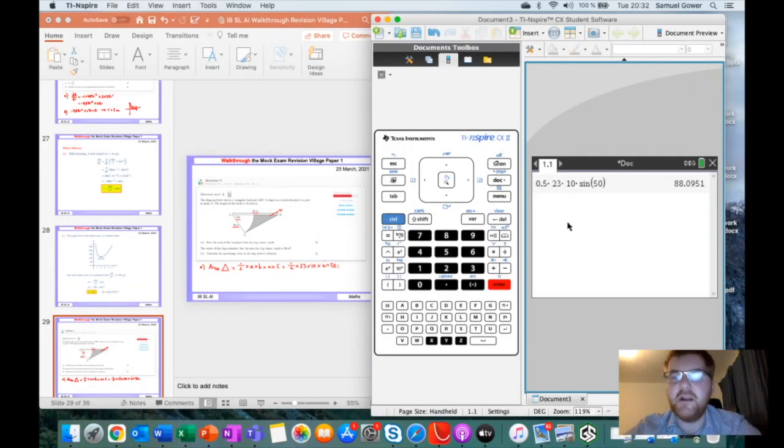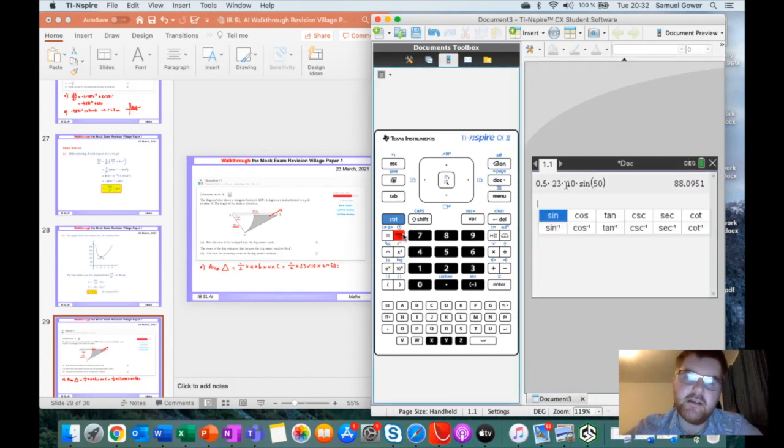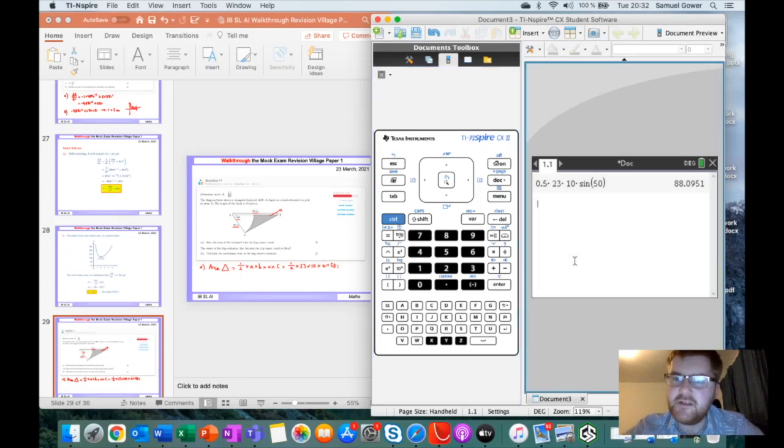Make sure you write this in the exam so you can guarantee those method marks, times sine 50, and I'm going to go over to my GDC and work out the answer. Okay, so I've typed this into my GDC. I've got the answer of 88.0951. Make sure this is in degrees, not in radians, otherwise you'll get the incorrect answer. I've got the sine function by going to the button called Trig. My first task is that I've worked out the area of the triangle, which is 88.0951.